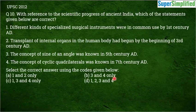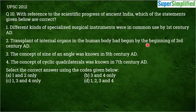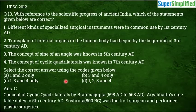Question number 10, the last question, from UPSC: With reference to the scientific progress of ancient India, which of the statements given below are correct? Statement 1 — different kinds of specialized surgical instruments were in common use by the 1st century AD. Statement 2 — transplant of internal organs in the human body had begun by the beginning of the 3rd century AD. Statement 3 — the concept of sine of an angle was known in the 5th century AD. Statement 4 — the concept of cyclic quadrilaterals was known in the 7th century AD. The correct answer is C — 1, 3 and 4 only.